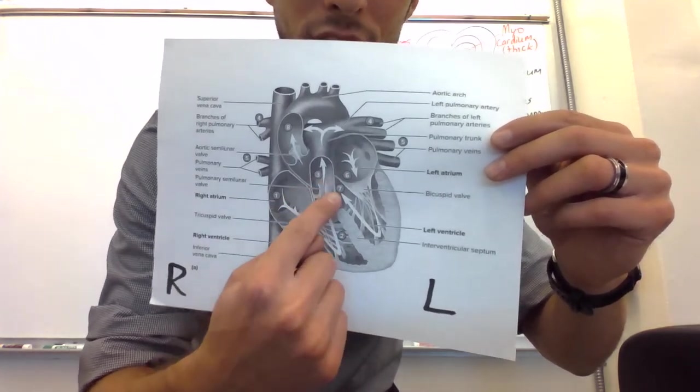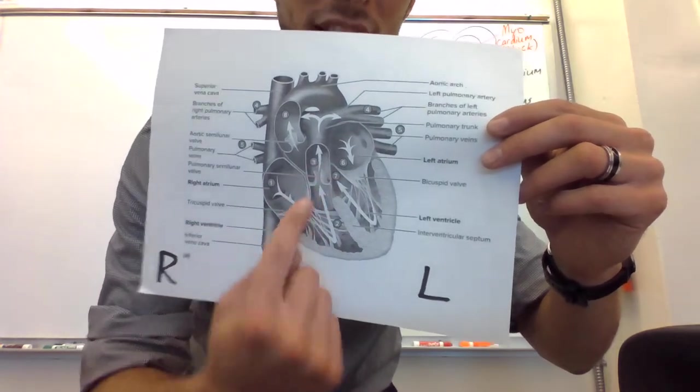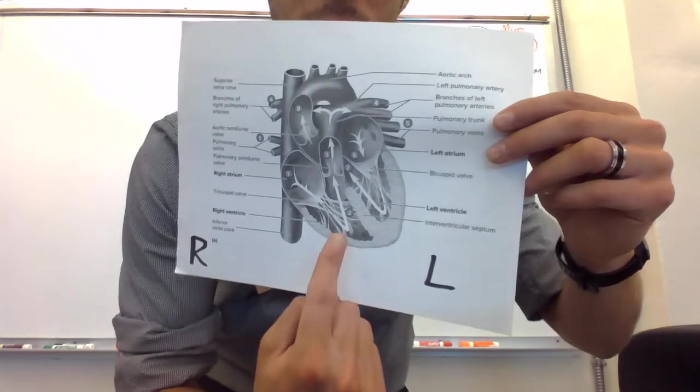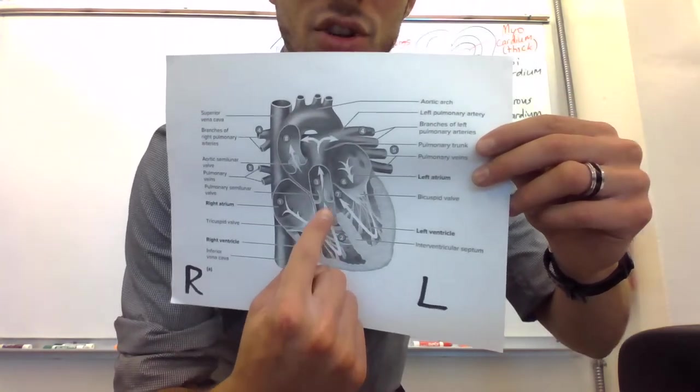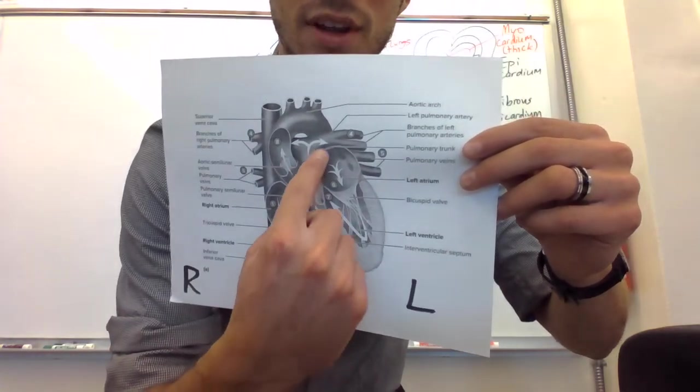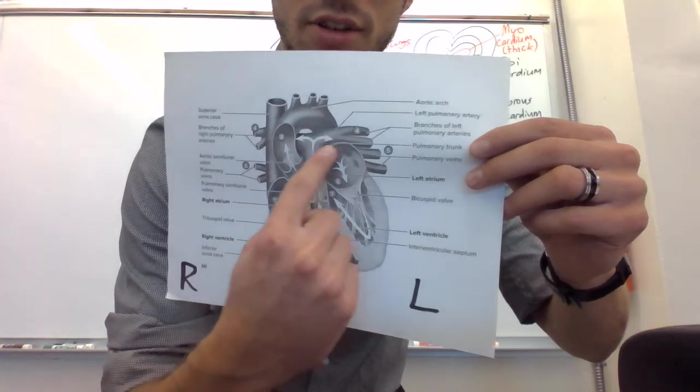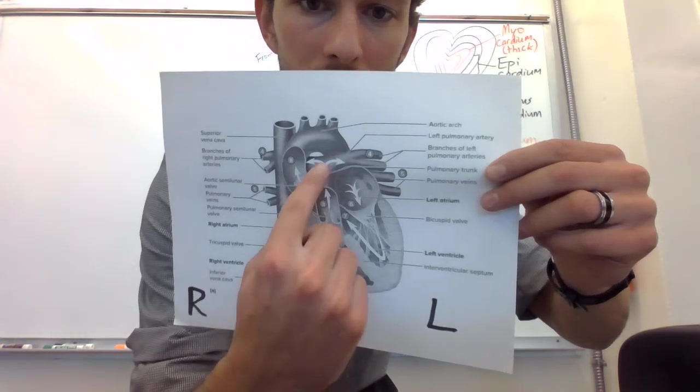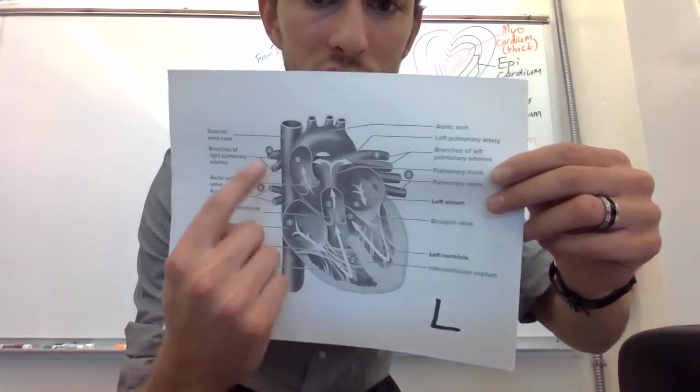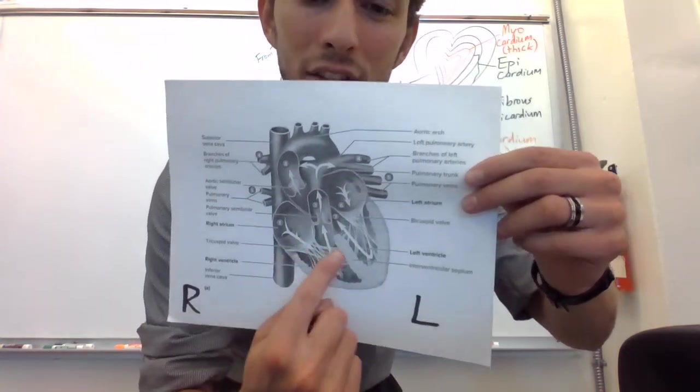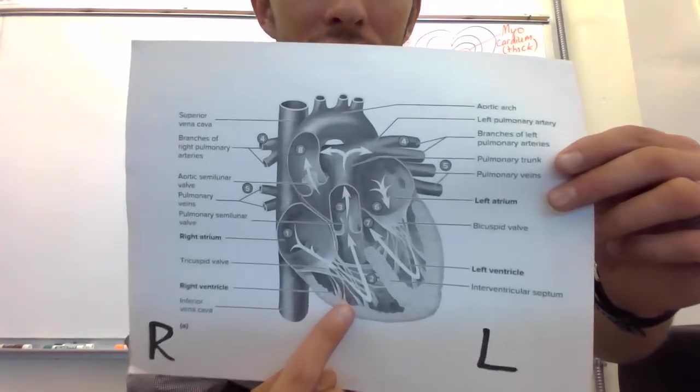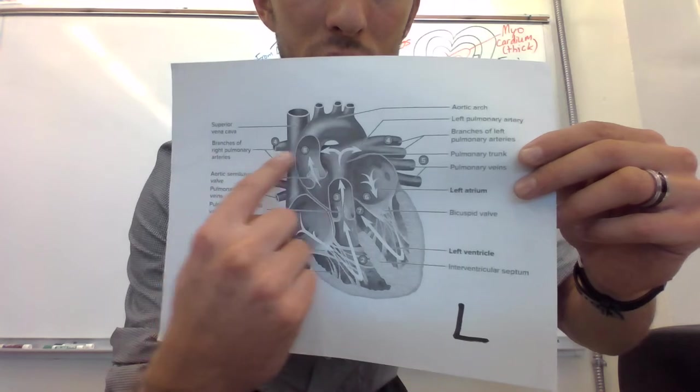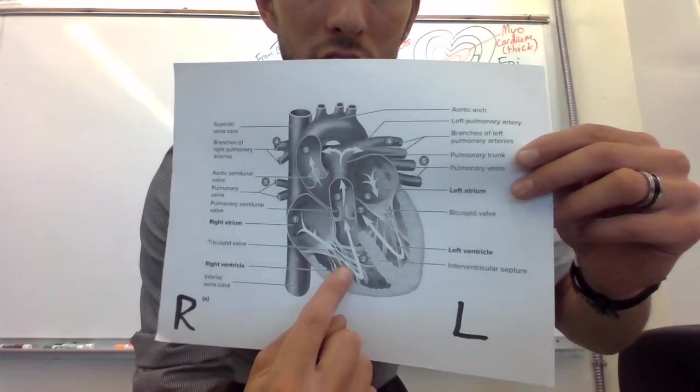This is going to be your semi-lunar valve. The way I remember that is it's pumping it to the moon, pumping it out and up. So pumping it through the pulmonary semi-lunar, which will go to the pulmonary arteries. Arteries are away from the heart. So those will go to the lungs, away from your heart, pulmonary arteries, two sides, because it has to go to two lungs.